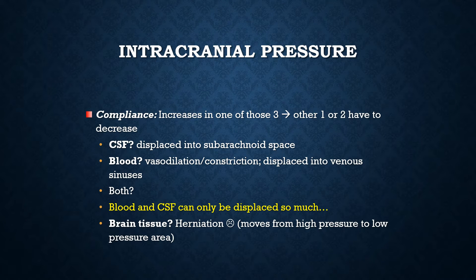Here we can see each of the three components and how they can adapt to increases in intracranial pressure. The CSF can reduce pressure by being displaced into the subarachnoid space. Blood vessels may constrict or dilate to reduce blood flow to the brain, and blood can also be displaced into venous sinuses. Sometimes the CSF and blood make accommodations at the same time to adapt to an increased ICP. But now we have that third element — the brain. Our CSF and blood can fairly easily adapt to some changes in pressure, but what can our brain do to adapt to an increase in intracranial pressure?